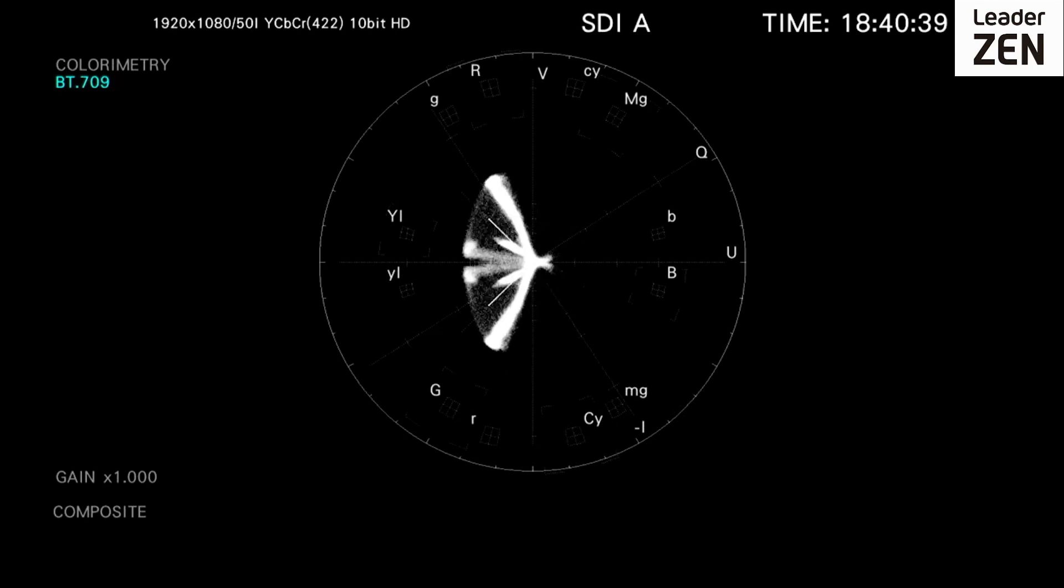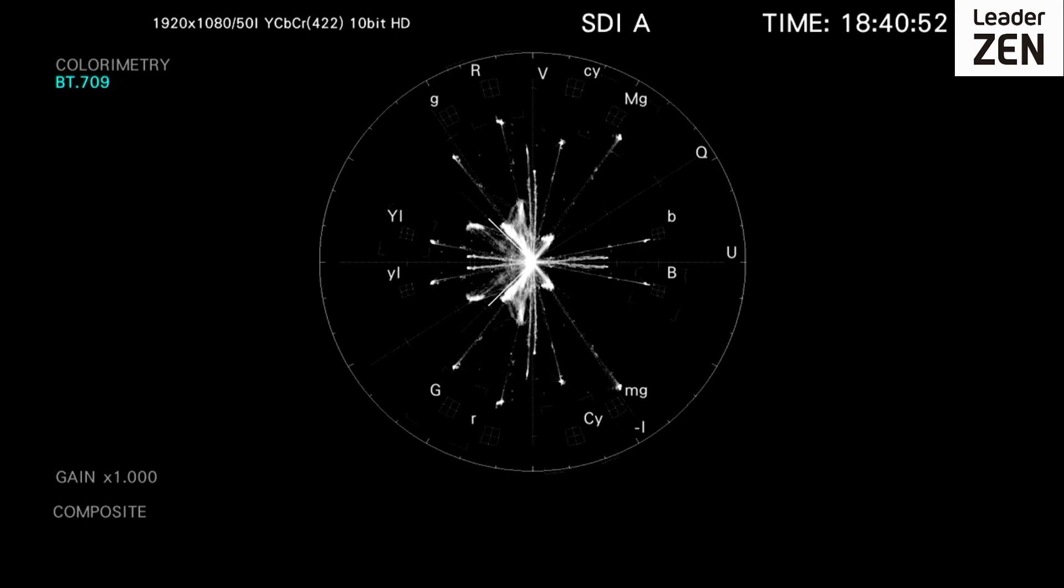As the vectorscope only operates with CB and CR signals, RGB has to be converted to CB CR to be displayed on a vector display. There is no luminance component displayed.